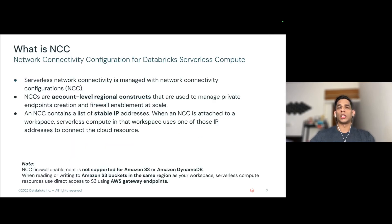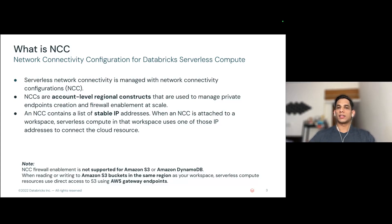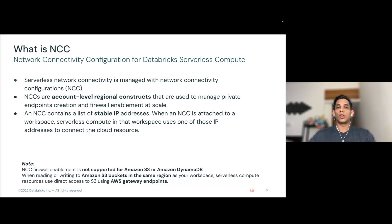NCC helps us manage network connectivity from Databricks serverless clusters to other data sources, whether these data sources are on AWS or not. NCCs are account-level regional constructs, meaning you create them from the account console, and each NCC that you create for a region can be utilized by multiple workspaces. NCCs help you expose stable IPs for serverless clusters to be whitelisted on a firewall. NCC also helps you create private endpoints and establish private link connections from serverless clusters to other resources on AWS.